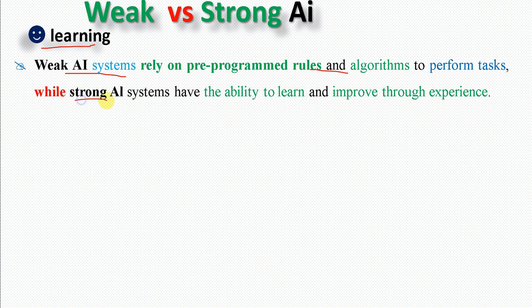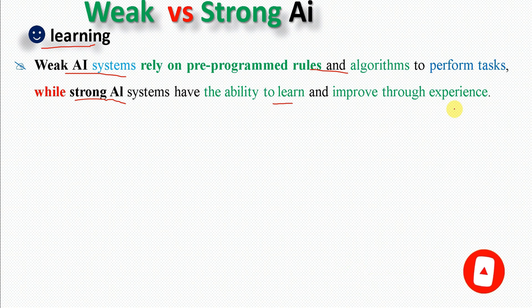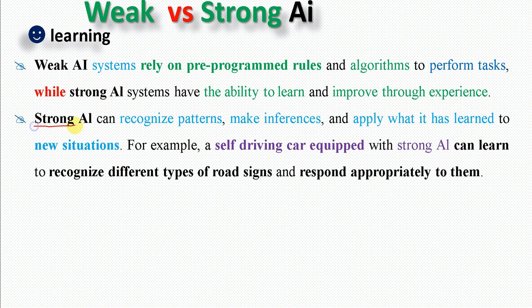Strong AI has the ability to learn and improve through experience, similar to a human being. A strong AI system can recognize patterns, make inferences, and apply what it has learned to new situations.